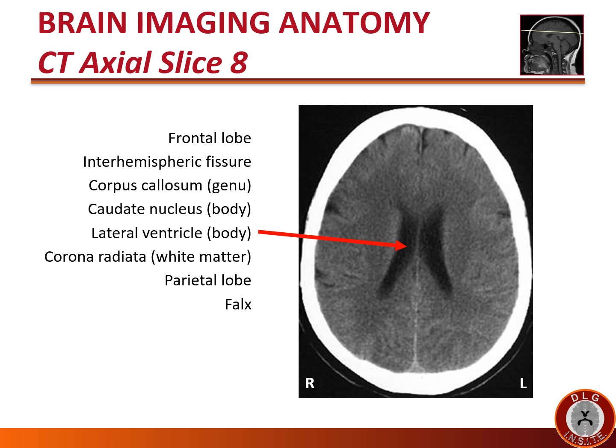We are now at the top of the lateral ventricle bodies. As long as we still see the bodies of the lateral ventricle, the deep white matter is called the corona radiata. At this level the posterior part of the brain is the parietal lobe — we are now too rostral to see the occipital lobe. Once again we see the hyperdense dural falx separating the two cerebral hemispheres.